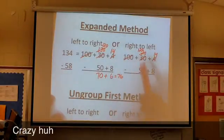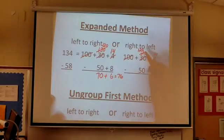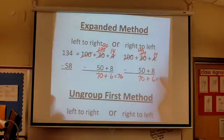Now that I've done all of my ungrouping, I can do my subtraction. And that's going to be the same I mentioned before. So 70 plus 6 is 76.